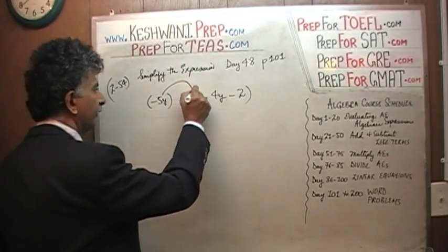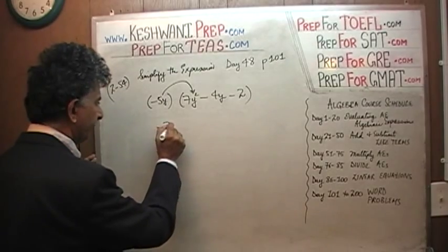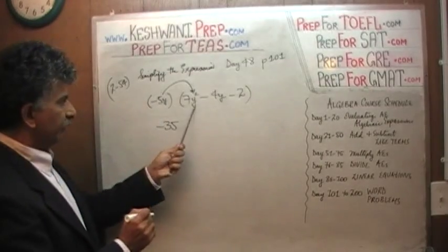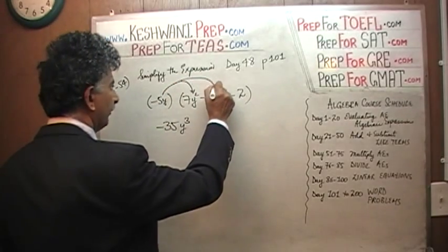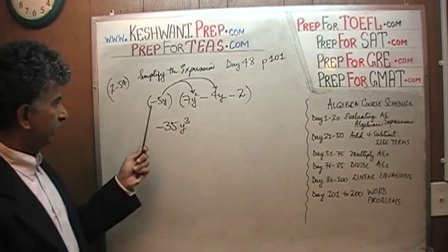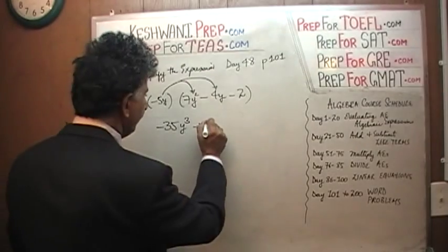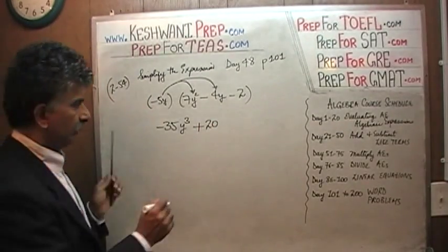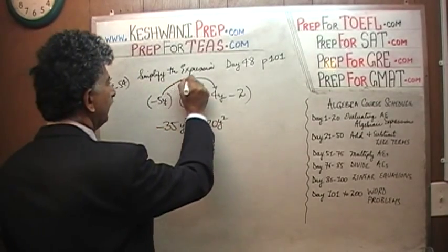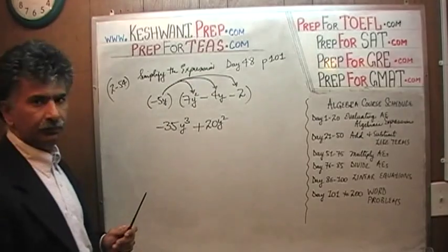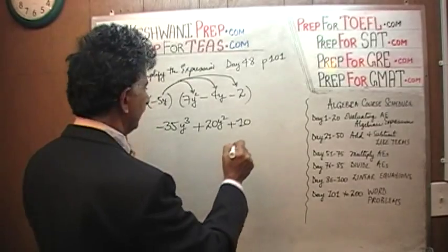So: negative 5y times 7y squared — negative 5 times 7 is negative 35, and y times y squared is y cubed. Then negative 5y times negative 4y — negative times negative gives us positive, 5 times 4 is 20, and y times y gives us y squared, so positive 20y squared. And finally, negative 5y times negative 2 — negative 5 times negative 2 gives us positive 10, and then the y. So the answer is negative 35y cubed plus 20y squared plus 10y.